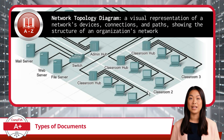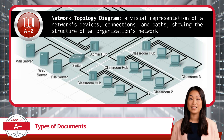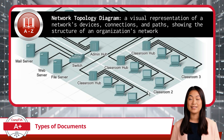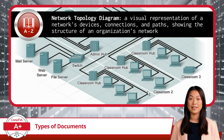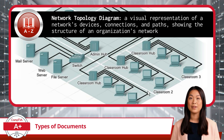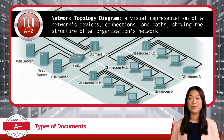Next up, we have the Network Topology Diagram. This is a visual representation of a network's devices, connections, and paths, showing the structure of an organization's network. It's like a map, but instead of roads and cities, it showcases routers, switches, servers, and other end devices, along with the connections between them.